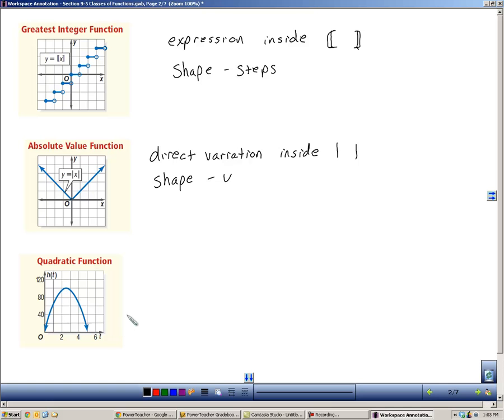The next one's a quadratic function. It looks like this: y equals ax squared plus bx plus c. That's a general form. And the shape of a quadratic is a parabola.